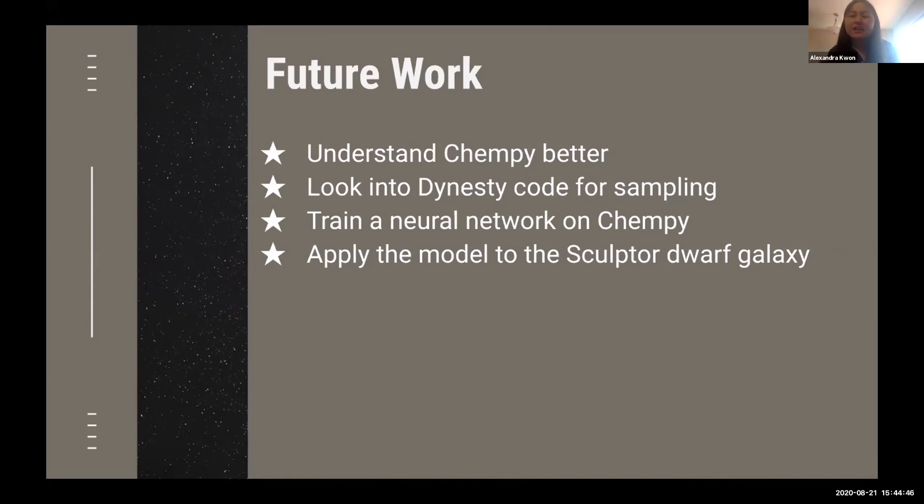Additionally, it is very slow right now. Our model takes a very long time to run. So we are looking into ways to speed up this process, which include looking into possible different sampling methods, as well as training a neural network on CHEMPI. Of course the ultimate goal is to apply this model to the Sculptor dwarf galaxy. It will be very interesting to see not only the chemical evolution of the dwarf galaxy, but also the variance within the distribution, as well as the overarching galaxy parameters. Just from the observed star formation rates and the observed metallicities of the stars, we can tell a lot about the dwarf galaxy using our model, which is very interesting.